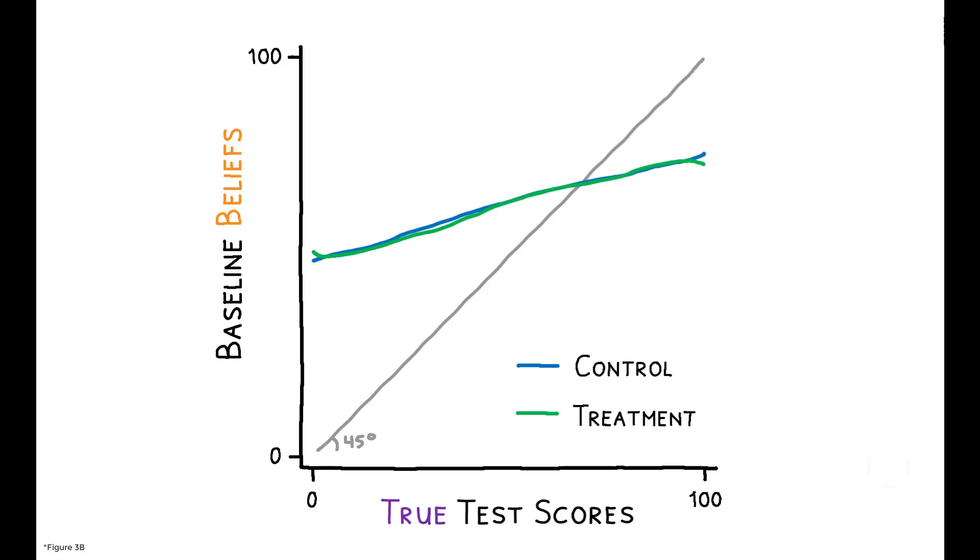Parents in both groups make mistakes along all parts of the distribution. They underestimate top performers and overestimate low ones.